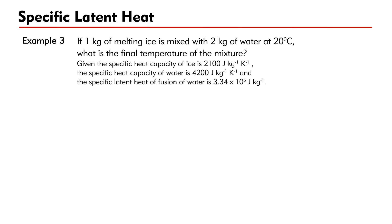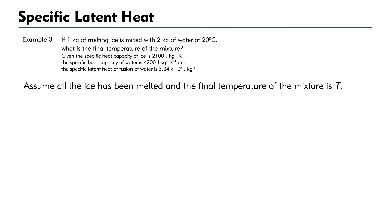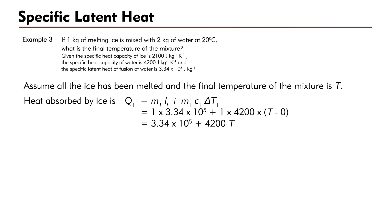Since the temperature of melting ice is always 0 degrees Celsius, the initial temperature of ice is 0 degrees Celsius. Assume that all the ice has been melted and the final temperature of the mixture is T. The change in ice involves two stages: melting and raising temperature.